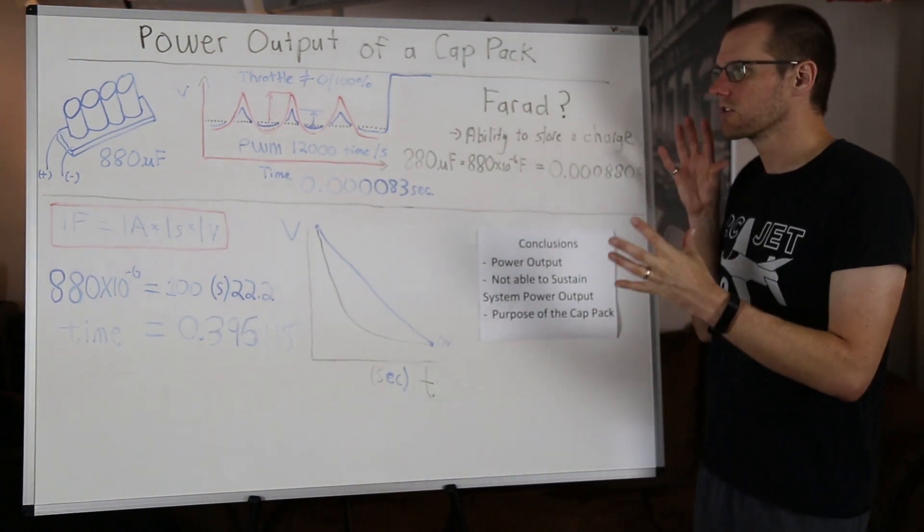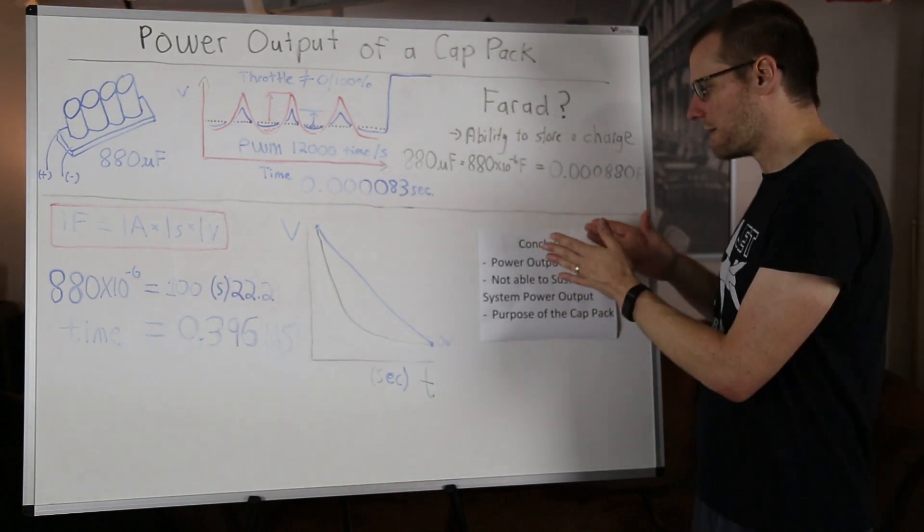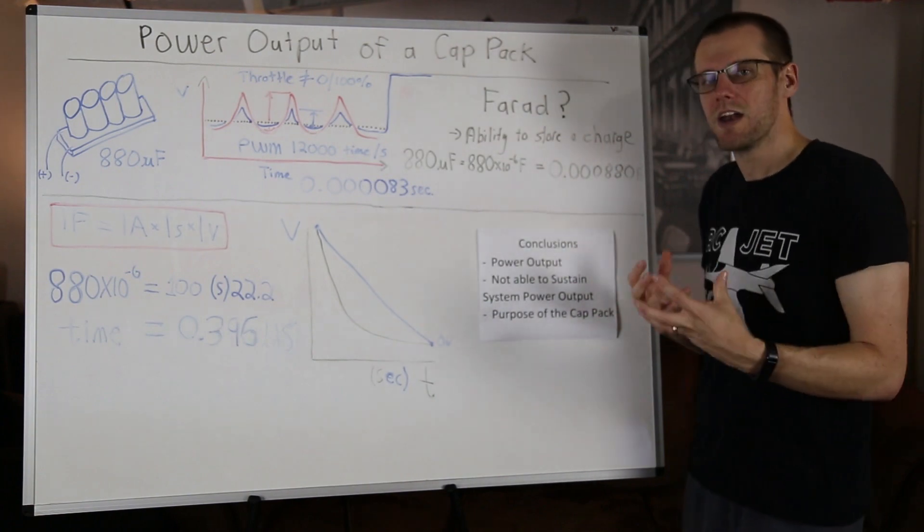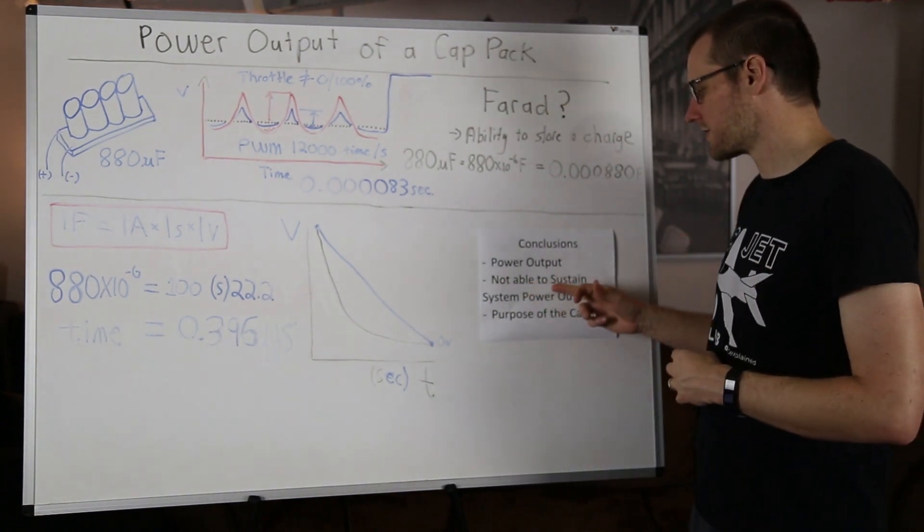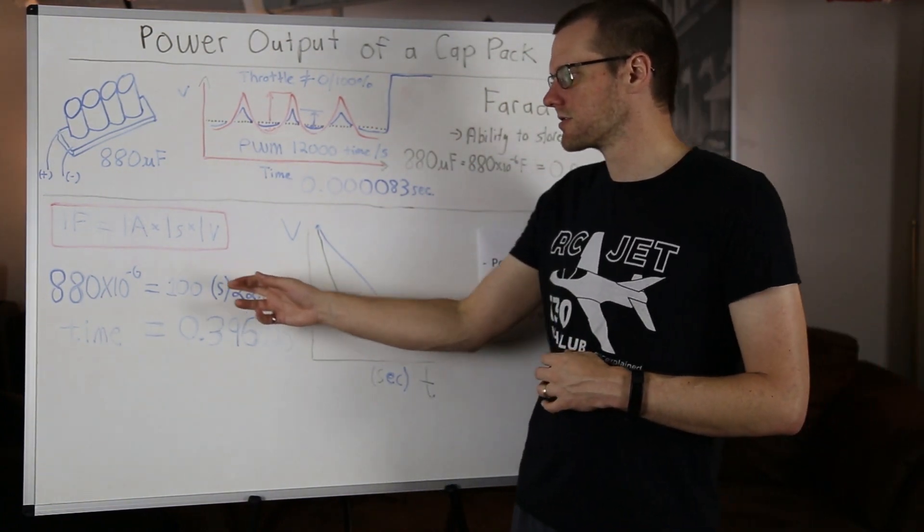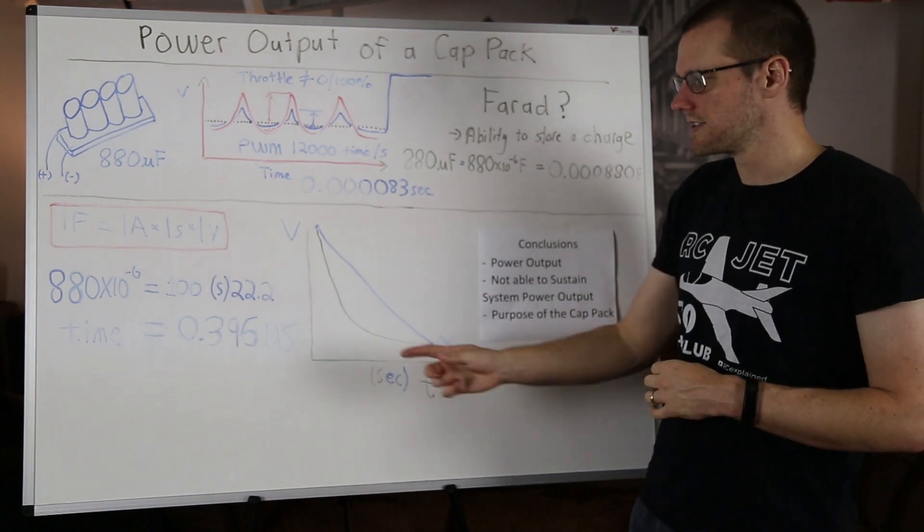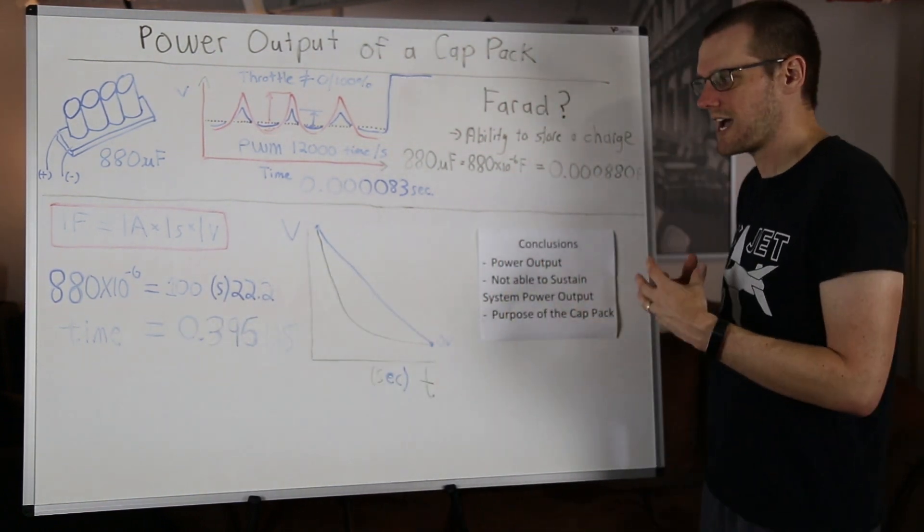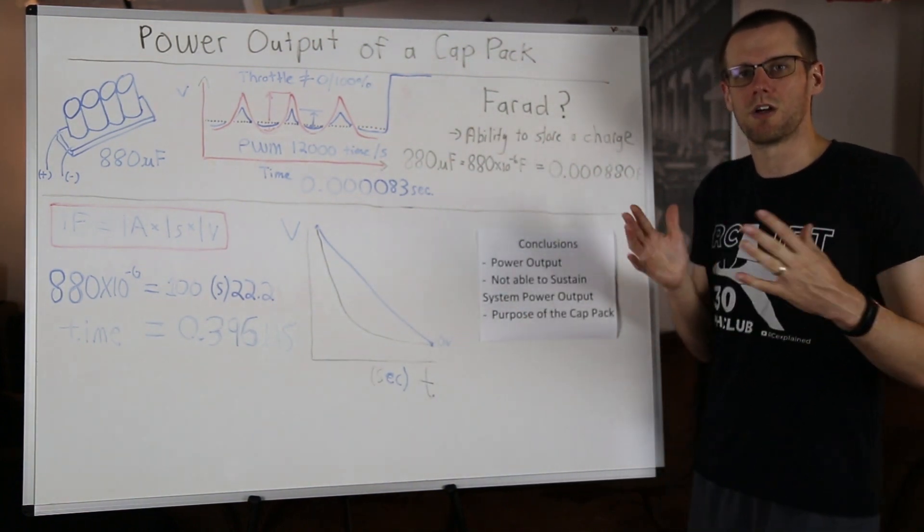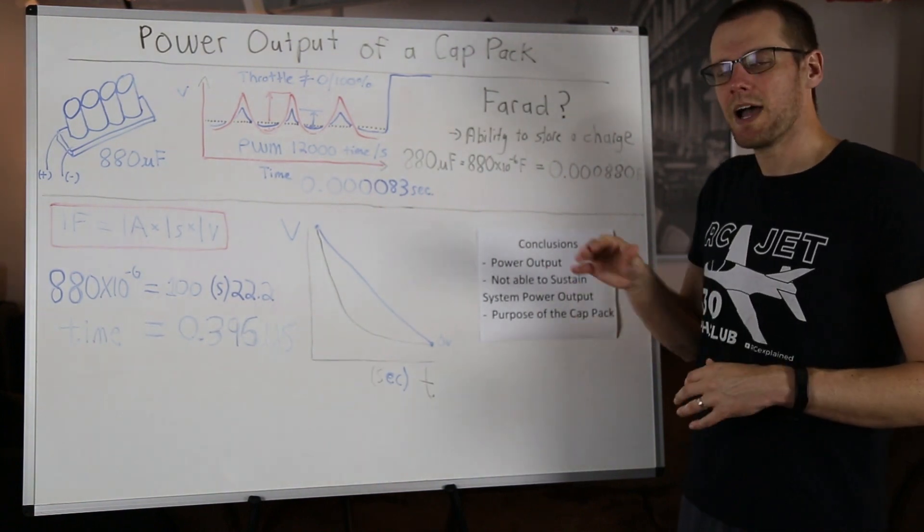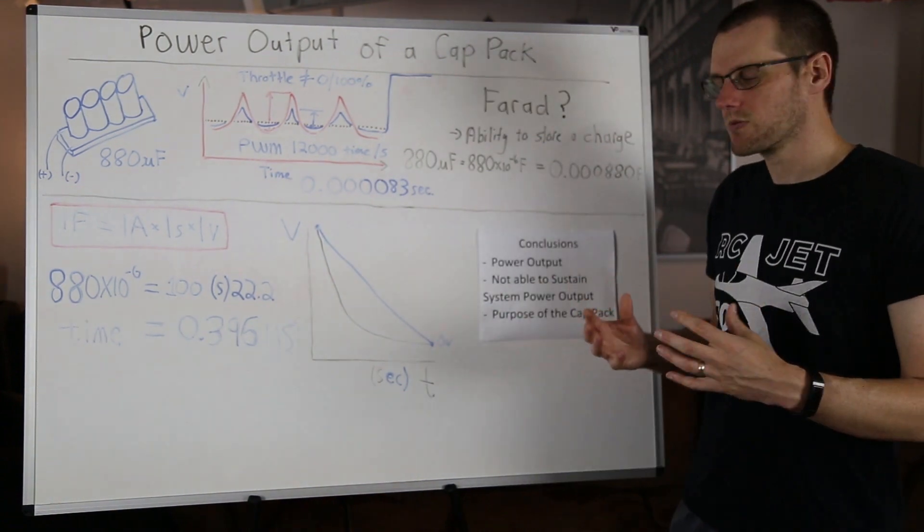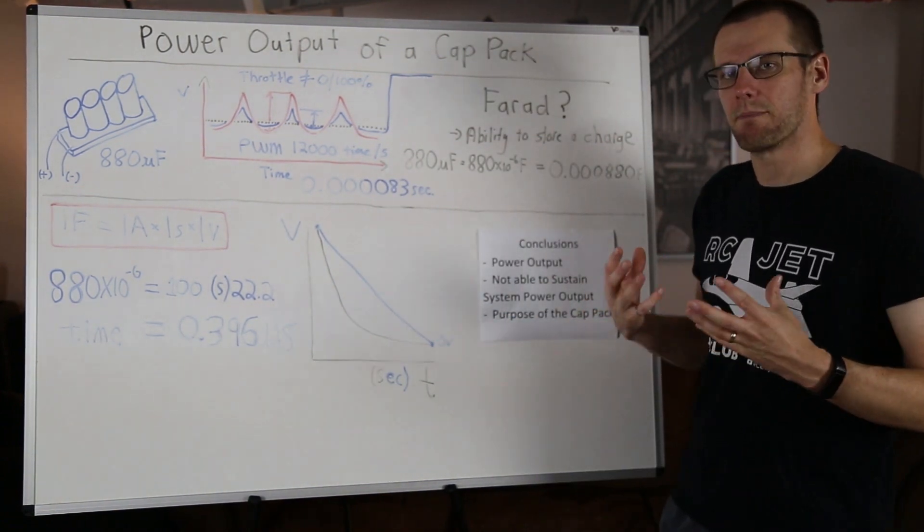So what exactly can we conclude from what we've gone over here today? The power output of our capacitors can be extremely high. They can dump a lot of power. Now what that means for us is they're not able to sustain the system's power output. If we actually wanted to drive our radio control vehicles off of this capacitor bank, this is roughly the amount of time that you'd be able to do that. So this time is pretty well negligible, and it would be fully discharged, and then you can no longer use any of that charge. Capacitor banks are not intended in any way to be able to sustain power output.